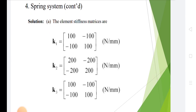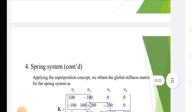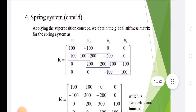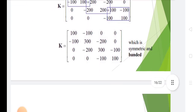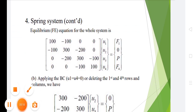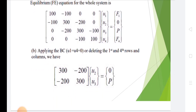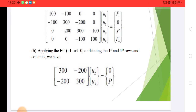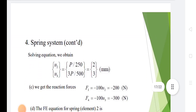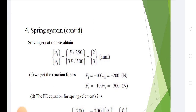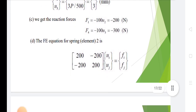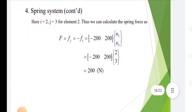For this spring system, we write element stiffness matrices k1, k2, k3. Applying the superposition concept, we obtain the global stiffness matrix, which is symmetrical and banded. The equilibrium equation for the whole system is formed. Applying boundary conditions u1, u2, u3, u4 and applied forces f1, 0, P, f4, then deleting the first and fourth rows and columns, we solve for u2 and u3. Solving gives f1 equals minus 200 N, f4 equals minus 300 N. The force in spring element 2 is 200 N.